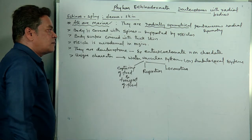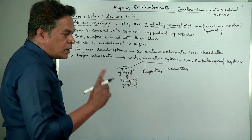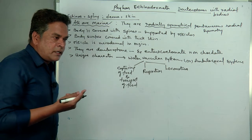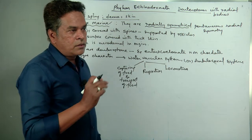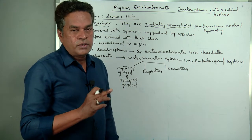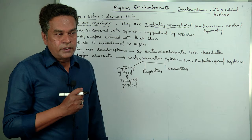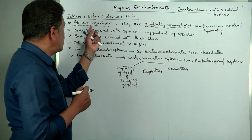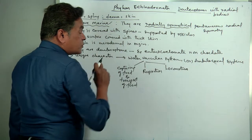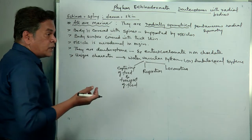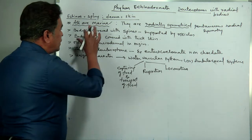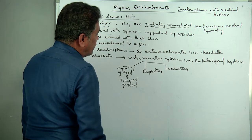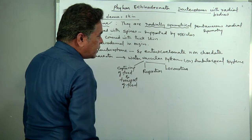All echinoderms are marine — this is another important specific feature. We already studied that in Ctenophora also, sexual reproduction and all are marine. Here also all are marine. These two phylums you must remember. Other phylums have marine as well as freshwater terrestrial members, but here all are marine. This is the important characteristic feature of Echinodermata: water vascular system and ambulacral system.